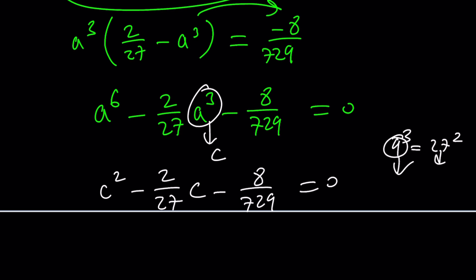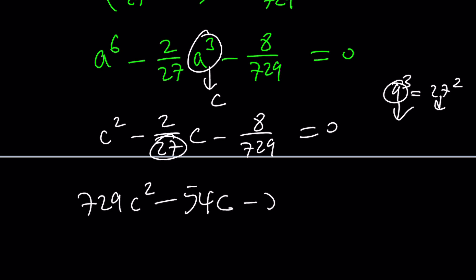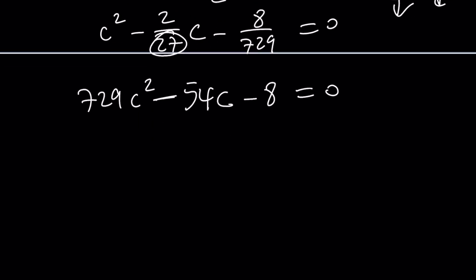You distribute and cross-cancel, and you get a quadratic equation that's not very easy to solve because of the large numbers. Using the quadratic formula, c equals negative b plus or minus the square root of b squared minus 4ac over 2a — and since a is not 1, we have to write it out explicitly.